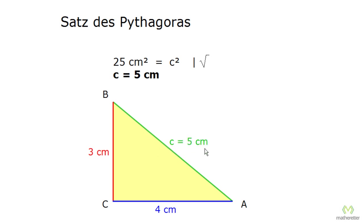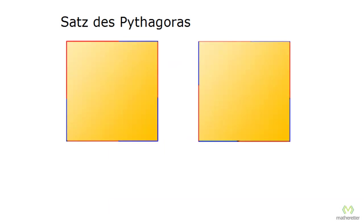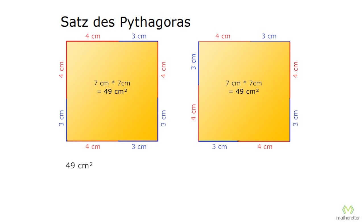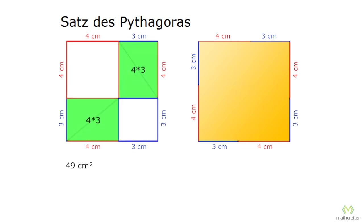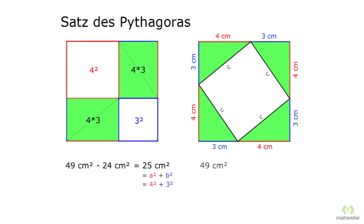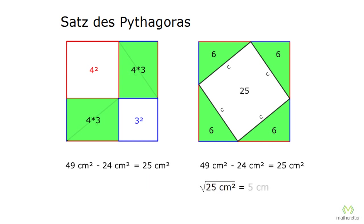We get 5 centimeters as the side length for C, which is our solution. There is also the longer way of calculating C: we could set up our two squares with side lengths of A plus B, that is 4 plus 3 equals 7, giving 7 times 7 equals 49 square centimeters. Then we subtract the two rectangles, each 4 by 3, which is 24 square centimeters in total, leaving 49 minus 24 equals 25 square centimeters for A squared plus B squared. On the right side we also subtract the four triangles — also 24 square centimeters — giving 25 square centimeters for C squared. Then the root of 25 equals 5 centimeters equals C.